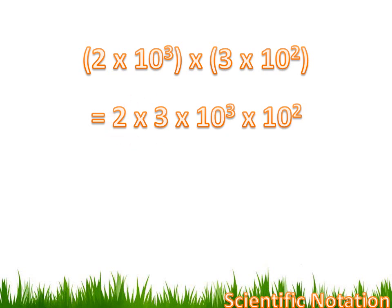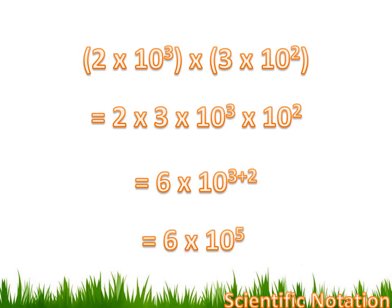Now, I'm going to multiply my 2 times 3 and I'm going to get 6. And then I'm going to multiply my 10 to the third times 10 to the second. And that equals 10 to the 3 plus 2 power. Now, if I add my 3 plus 2 power, I'm going to get 5. So, it really shortens down to 6 times 10 to the fifth.